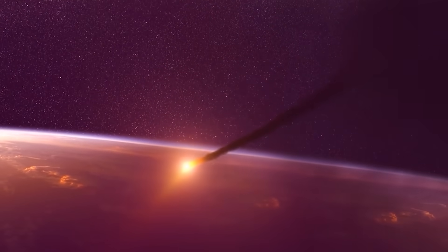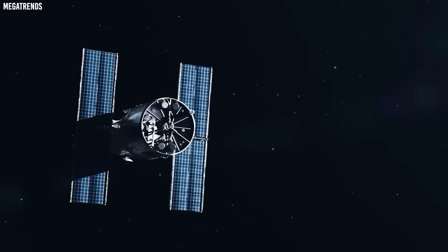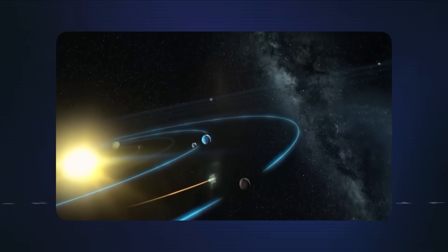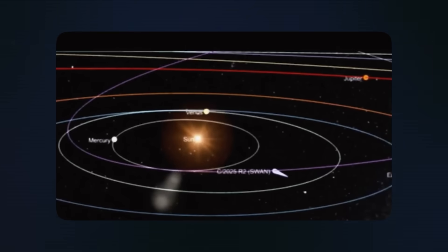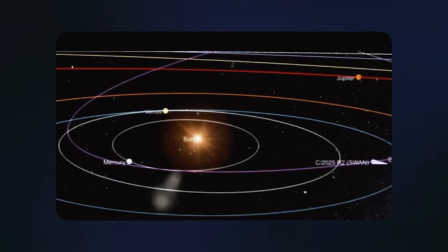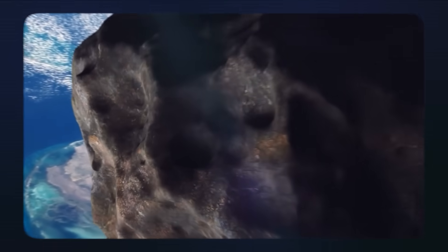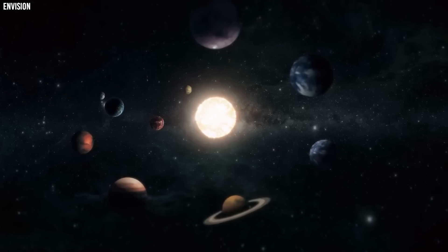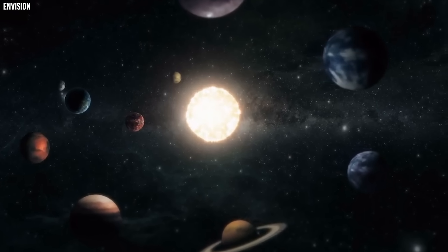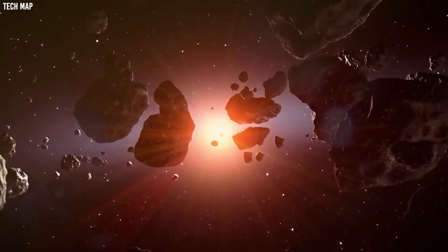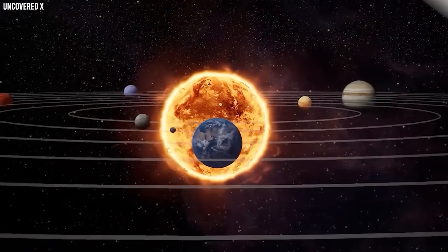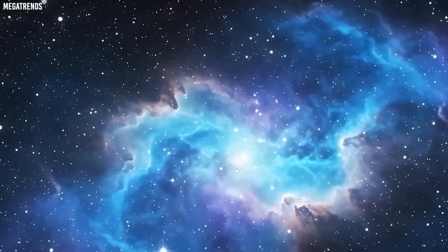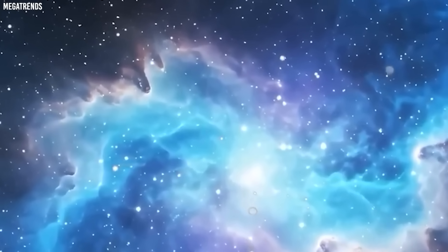Meteoroid stream dynamics are governed by complex gravitational and non-gravitational forces that act over astronomical timescales. When a comet releases particles during perihelion passage, those particles initially follow orbits very similar to the parent comet. However, solar radiation pressure affects different sized particles differently, causing the stream to gradually spread out. SWAN might not have been in the inner solar system for over a thousand years, depending on which orbital calculation turns out to be correct. That means any dust it left behind would have had centuries to spread out and dissipate.